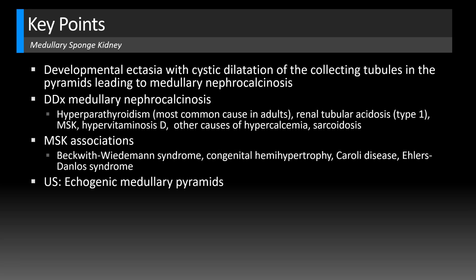On ultrasound, the renal pyramids will look echogenic. Interestingly, mild medullary nephrocalcinosis is actually better seen on ultrasound than on CT. In the early stages on ultrasound, the pyramids will be peripherally echogenic and centrally hypoechoic. As the disease evolves, the pyramids will become diffusely echogenic, and with progressive calcification, that's when you'll start to see the posterior acoustic shadowing, as in this case. So this case was an example of rather severe medullary sponge kidney.